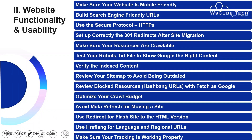The second part is website functionality and usability. We must make sure our website is mobile-friendly and build search engine-friendly URLs — structured in a readable form for both search engines and users. We use secure protocol HTTPS via SSL certification. Once your website is SSL certified, it automatically converts from HTTP to HTTPS. We also set up 301 redirects correctly after site migration and make sure your resources are crawlable.